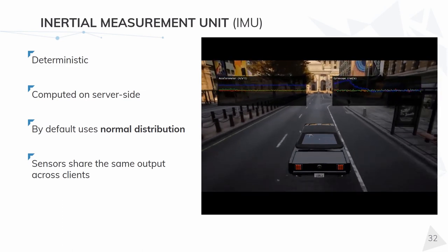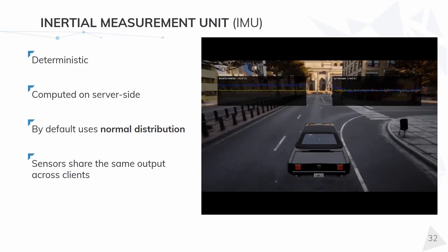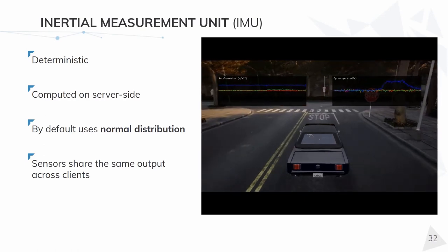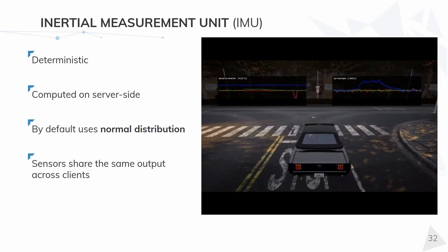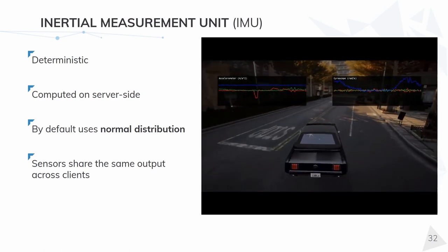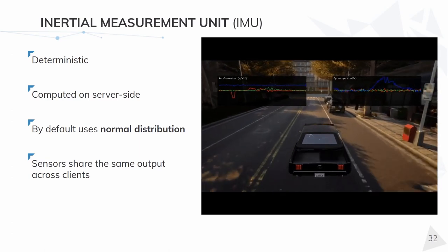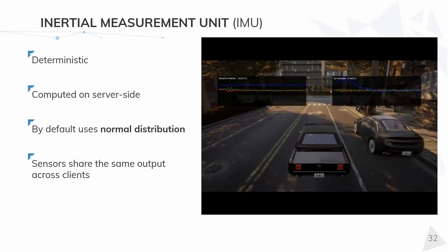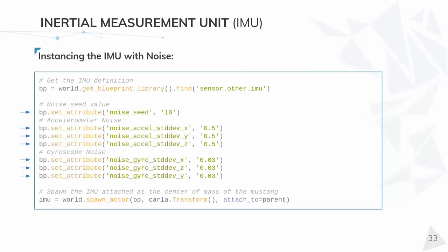It is like the equivalent of the lens distortion seen before in the cameras. It is prepared to be deterministic and is computed on the server side, but can be parameterized from the client side. This means that if you have multiple clients connected to the server, they will all receive the same sensor output. By default we are using a normal distribution for that, but you can change the code to adjust the noise for a more accurate model if required.